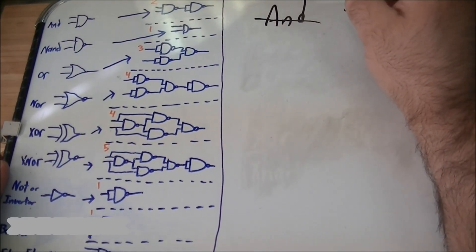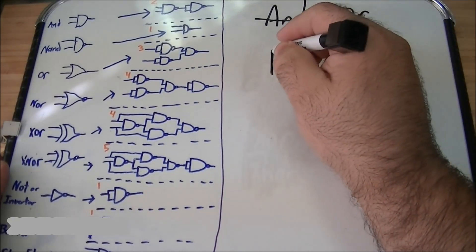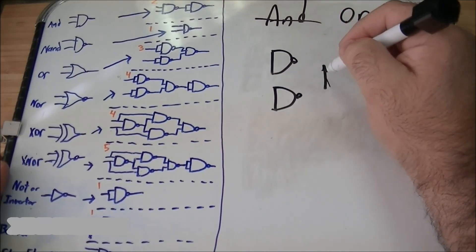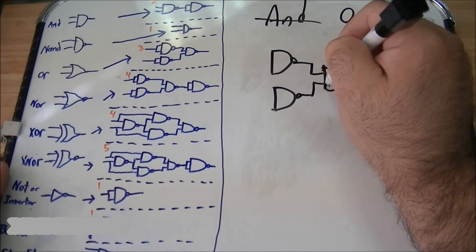We're going to do an OR gate now. How do we do that one? Three NANDs. Here they are.